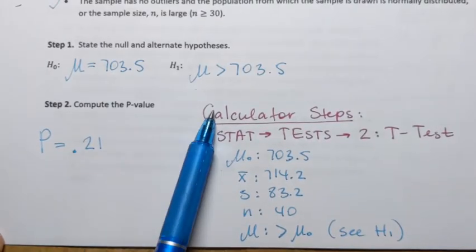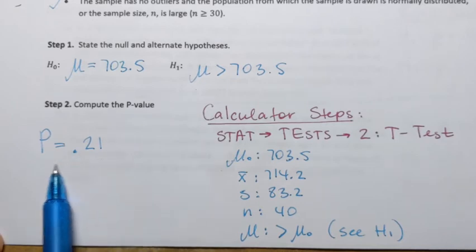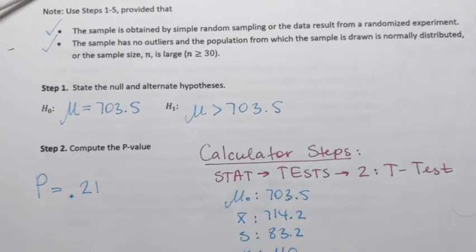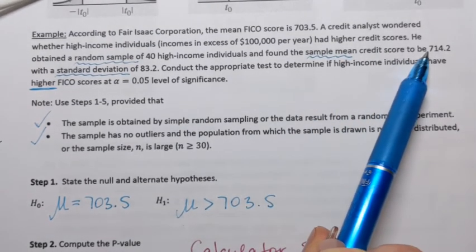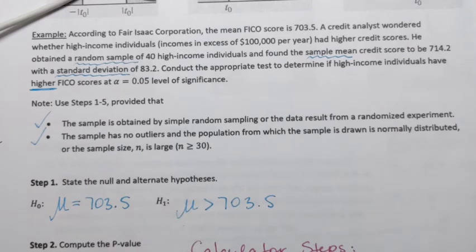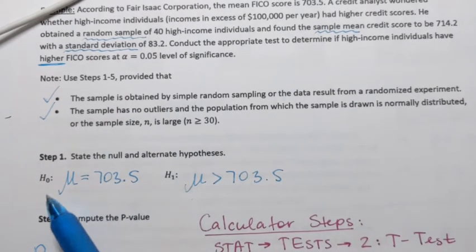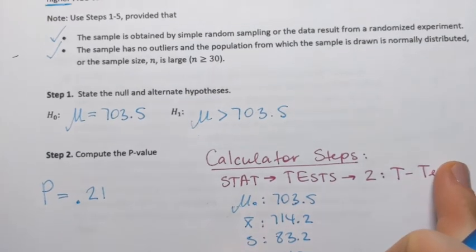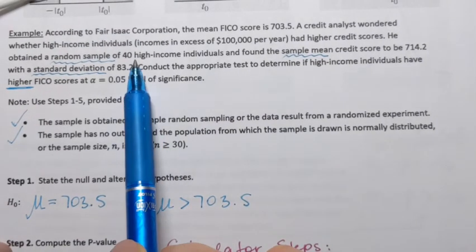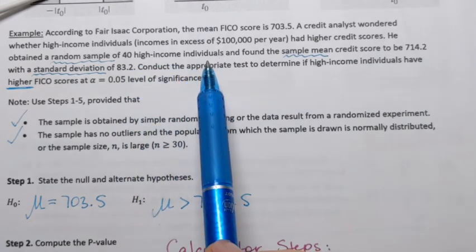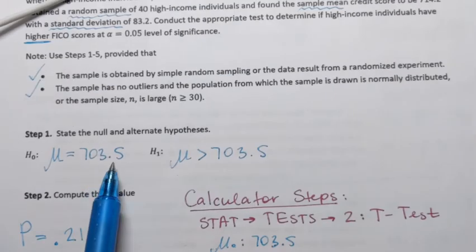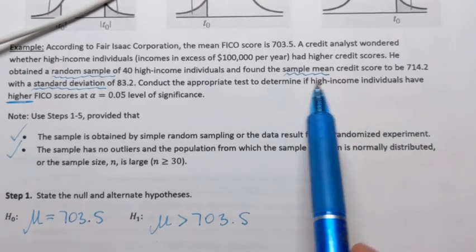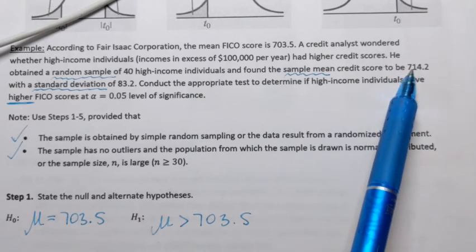Now, what is the meaning of the p-value? The p-value represents probability of how likely it is to obtain a sample with a given description, the following sample mean and the following sample standard deviation, from the population described in the null hypothesis. And as we can see, that probability is 21%. So it is likely that that sample in which we only had high-income individuals, so it is likely that those high-income individuals come from the population with the average or mean FICO score of 703.5 points. So in other words, there is nothing unusual that that sample had a little bit higher FICO score.